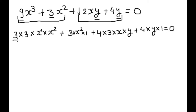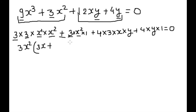Now the common term from the first group is 3x squared. We write 3x squared out, bracket starts, remaining is 3x plus 1, bracket closes. For the second group the common term is 4y. We write 4y out, bracket starts, remaining is 3x plus 1, bracket closes.